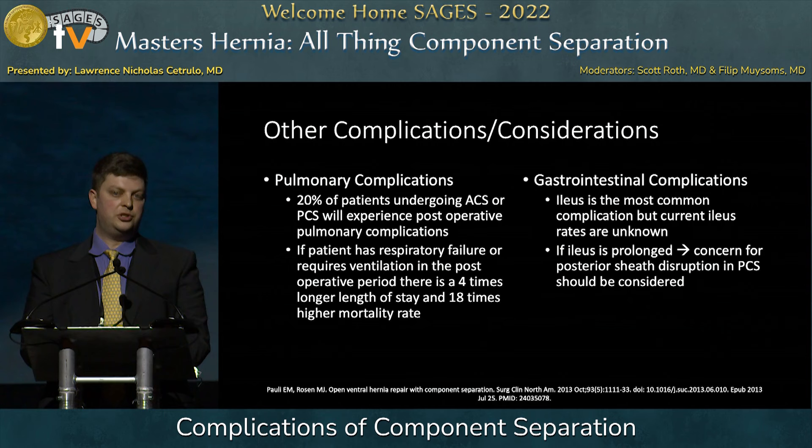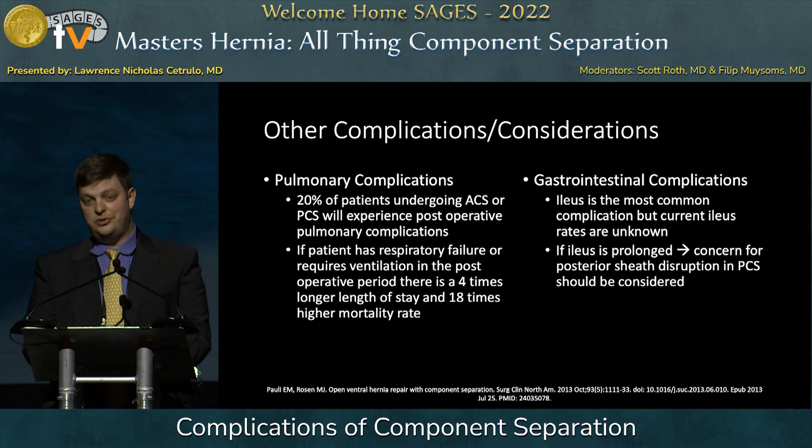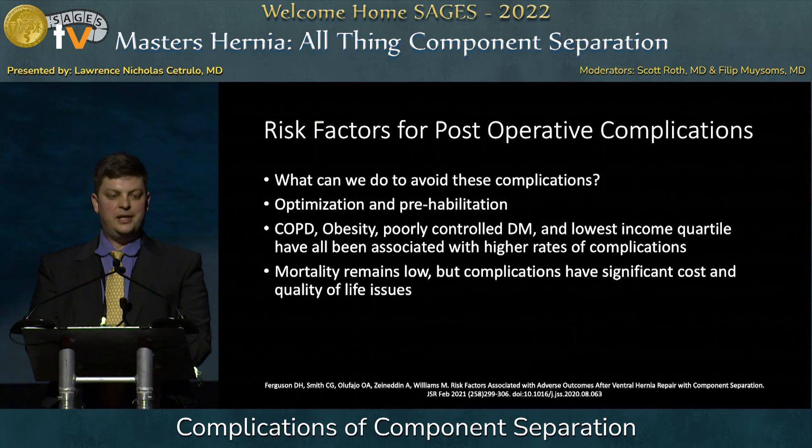Gastrointestinal complications — ileus being the most common. If your ileus is prolonged beyond three to four days, that's my trigger to get a CT scan and look for posterior sheath disruption. It's easy to bury your head in the sand and assume that someone who had extensive lysis of adhesions will just have a slow bowel, but it's better to know early if there's a posterior sheath problem, because it is much easier to fix when the bowel is not yet stuck to that mesh.